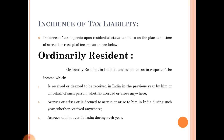The second situation: income accrues or arises or is deemed to accrue or arise in India during such year, whether received anywhere. In the first case, income is received in India but accrued anywhere. In the second case, income accrues in India but is received anywhere. That is the difference between the two situations.